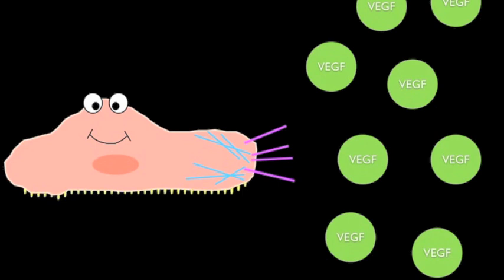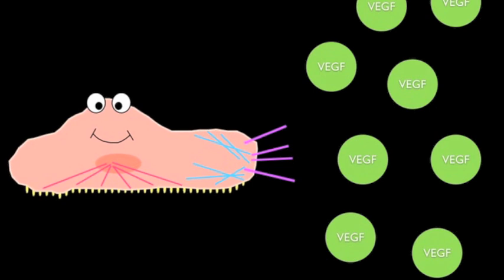The cell then attaches to the extracellular matrix via focal adhesions, and actin stress fibers are formed. These stress fibers then contract, causing the cell to move forward.